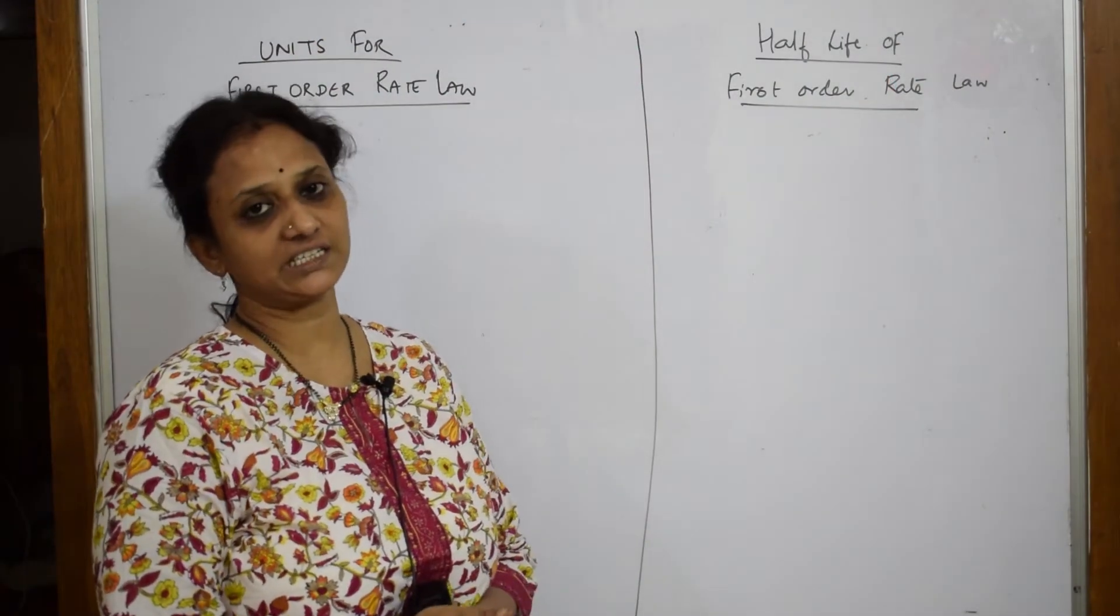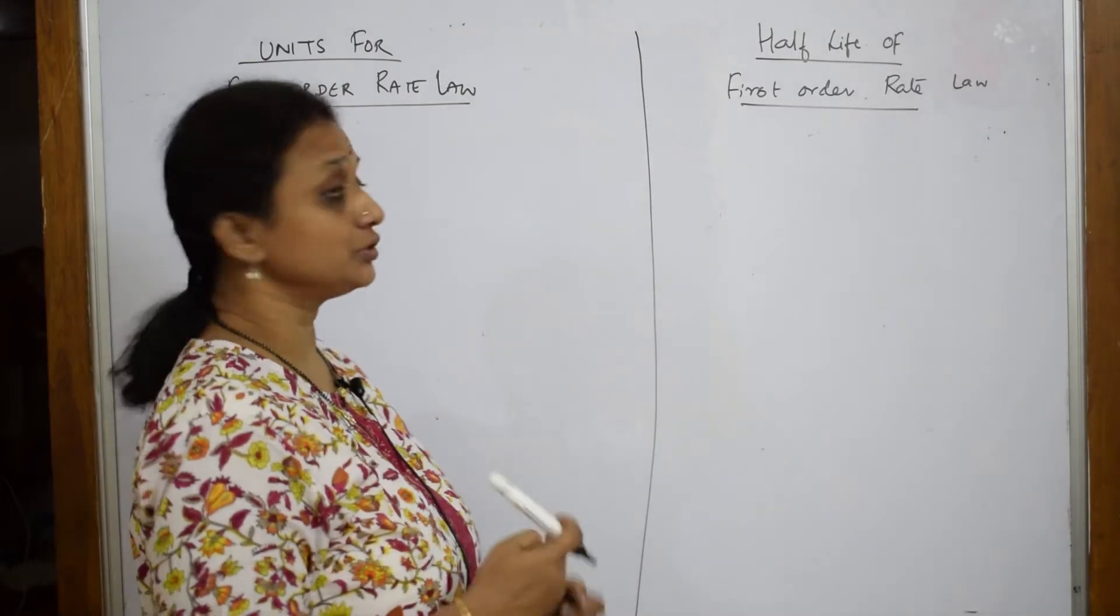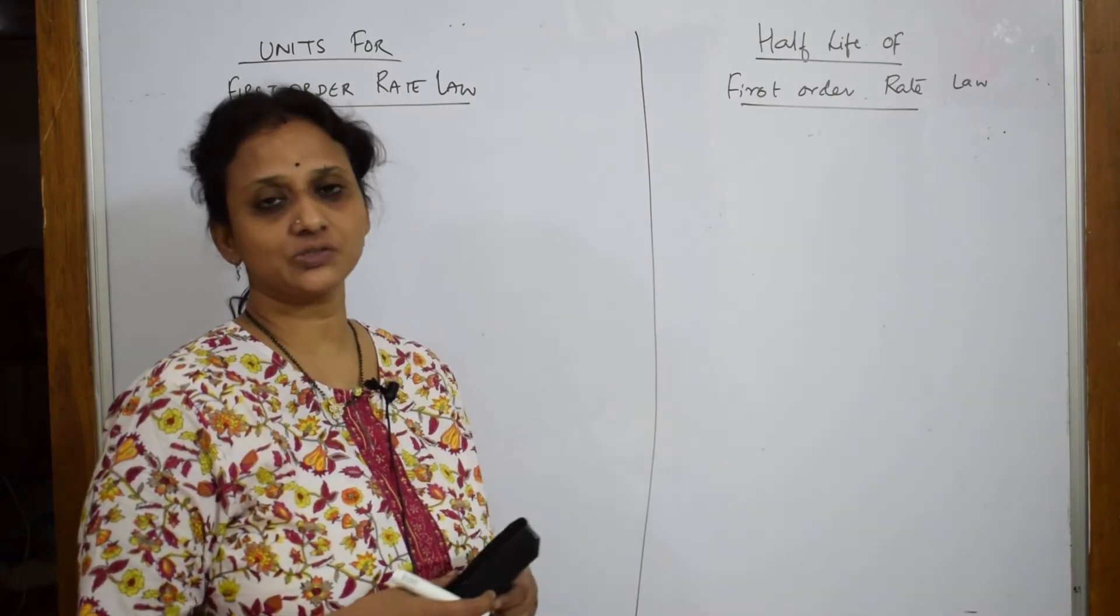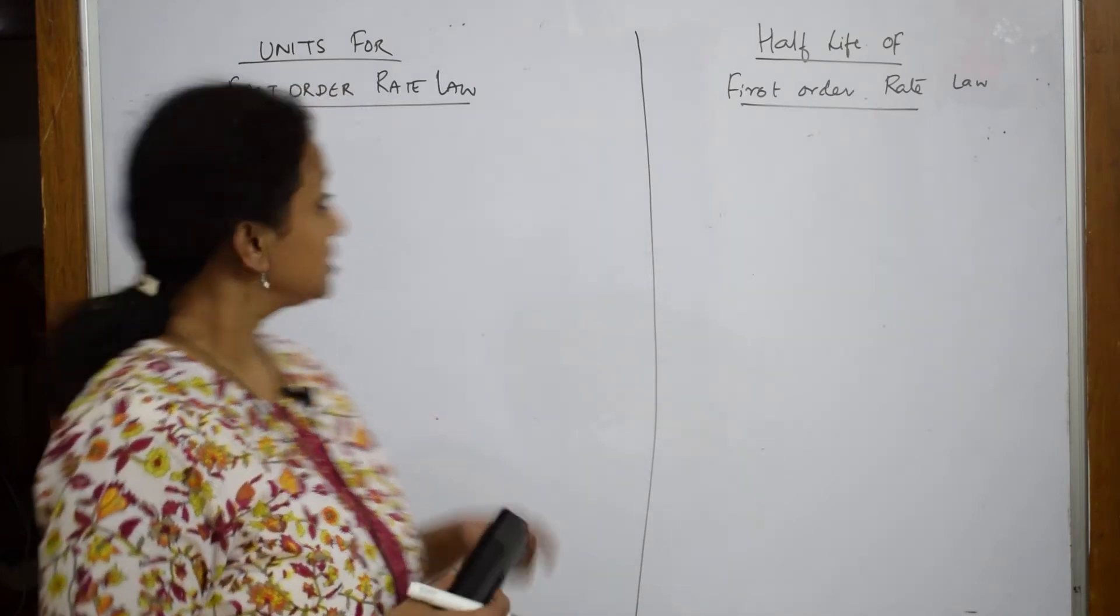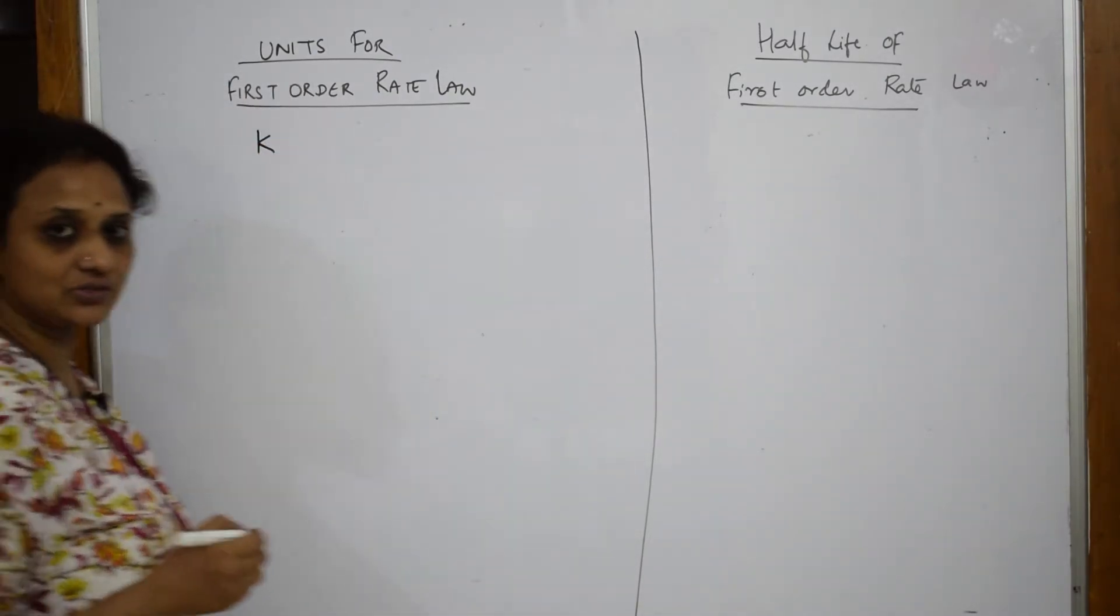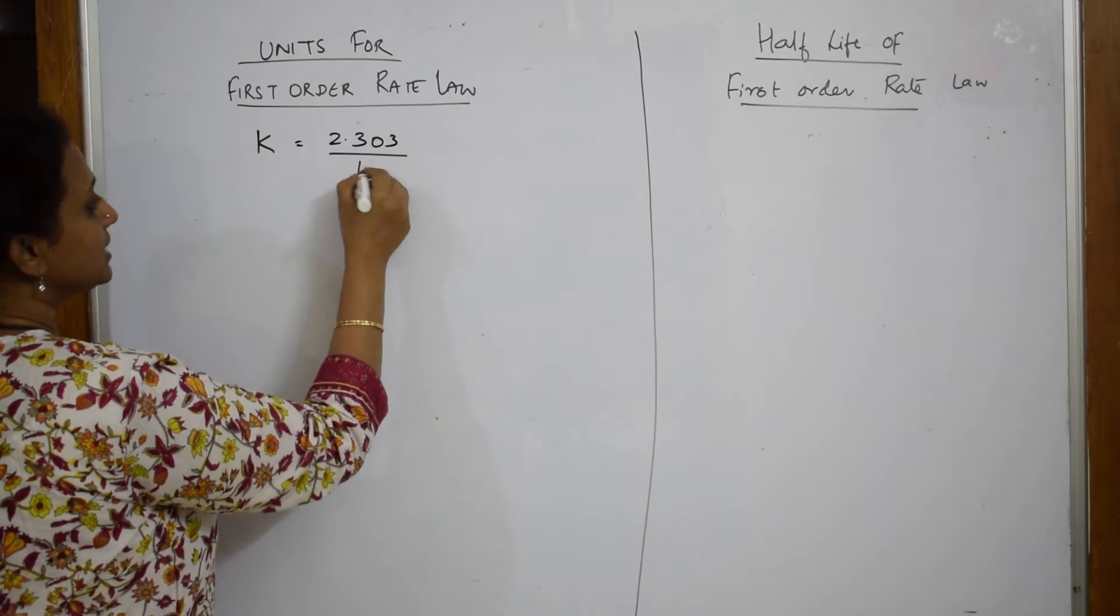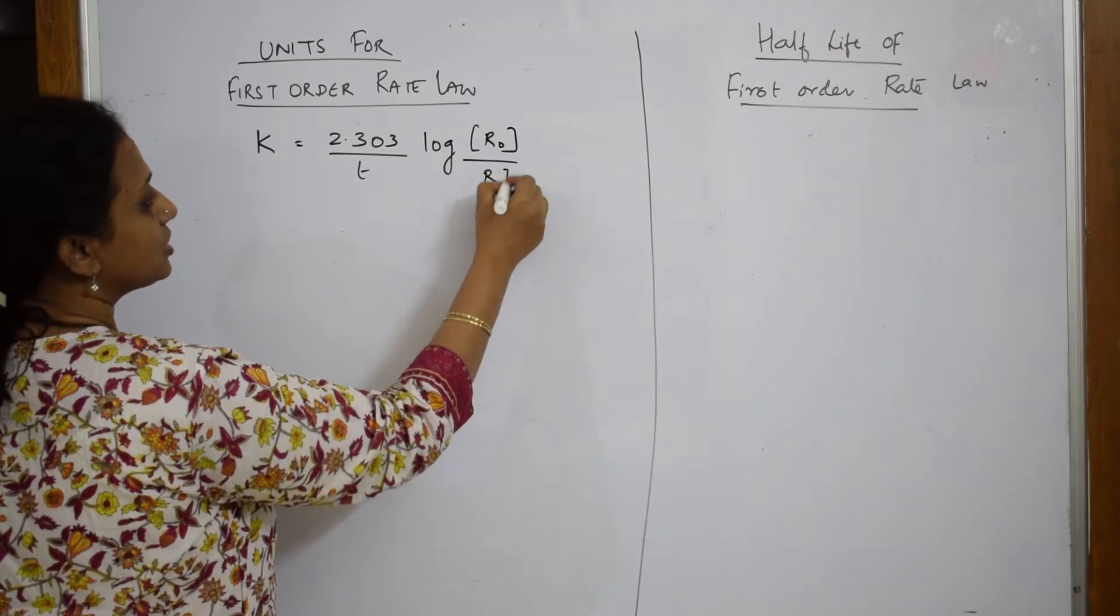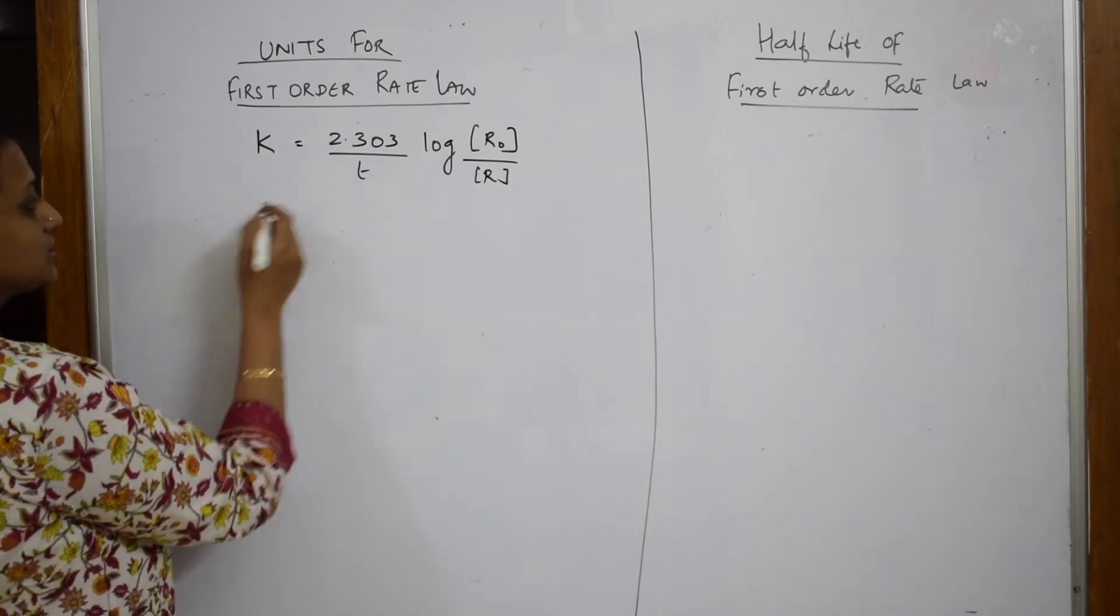So, we have learnt the first order rate equation, the integrated rate equation rather. Now, let us come back and learn the units for the first order rate equation as well as the half-life period. We have also done the same in zero order reaction, so please practice it. You need to learn the complete topic when you are learning the integrated rate equation. So, here when I come back to the units of the first order, let us first write what is rate constant.